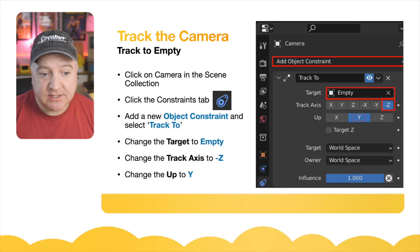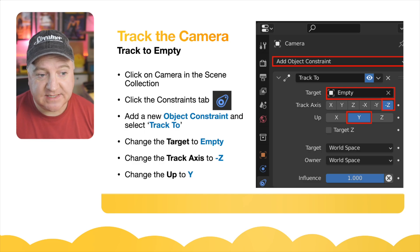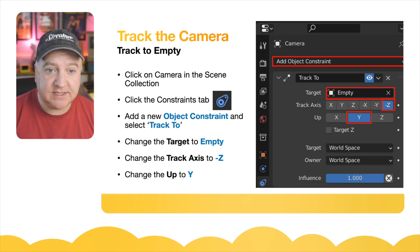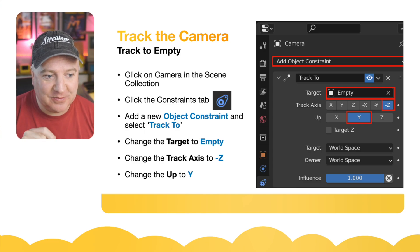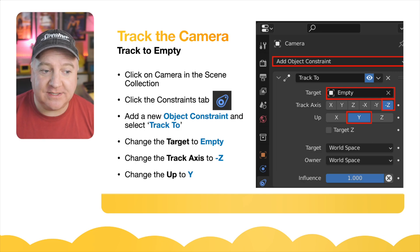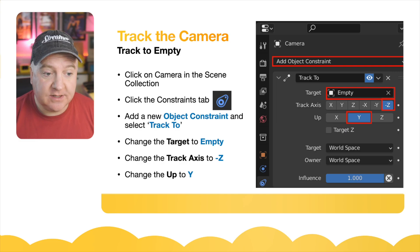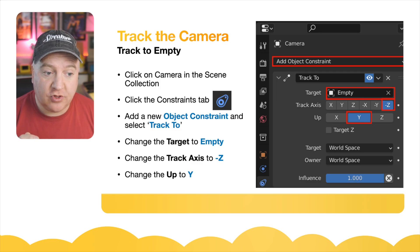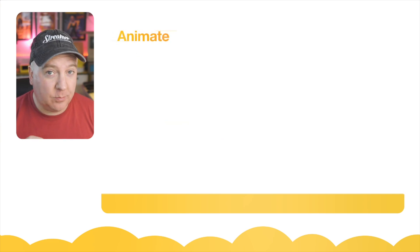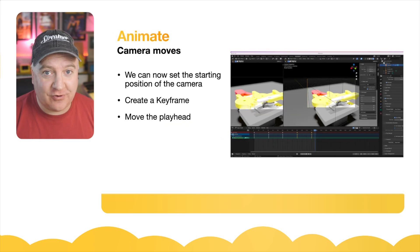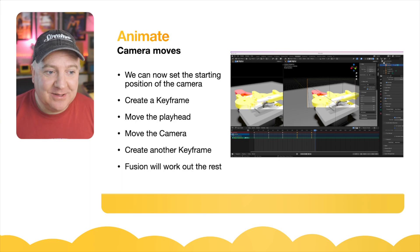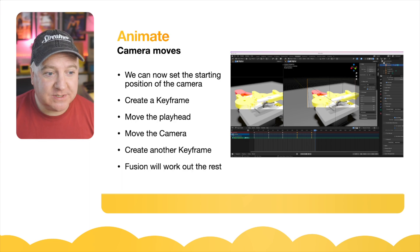Once the empty is placed, go to the camera in the scene collection and click on the object constraints tab — it looks like a little blue avocado. Click Add Object Constraint, select Track To, and change the target to the empty we just created. Change the track axis to -Z and the up axis to Y. Those are the correct settings for it to track everything properly.